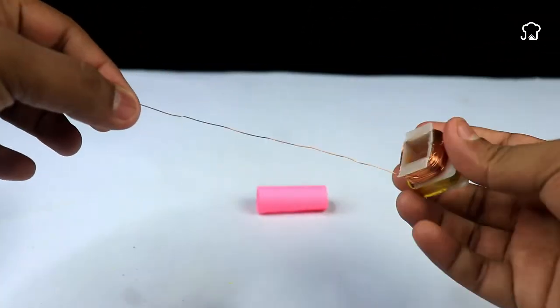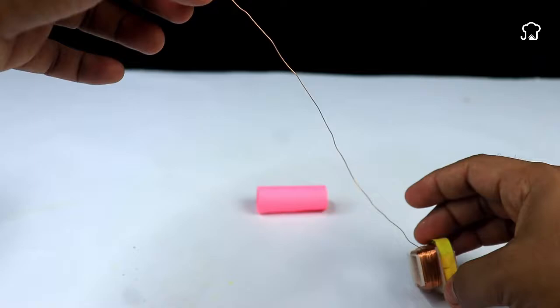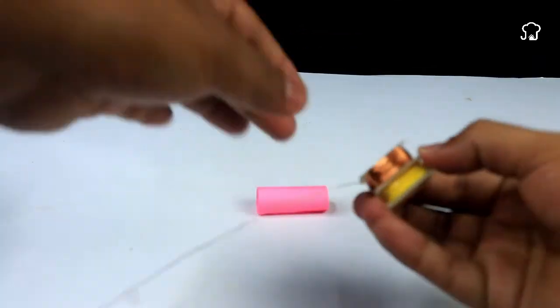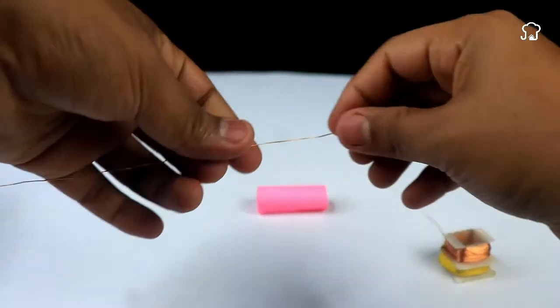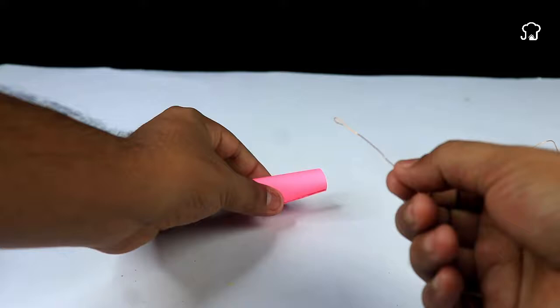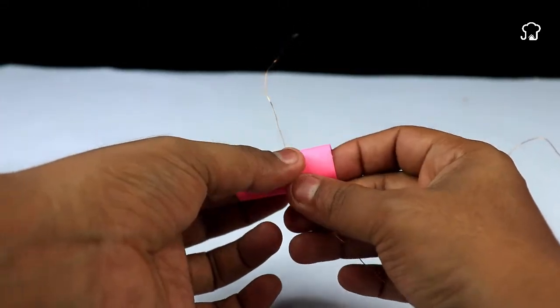We will need fine copper wire, which we will wind around the cardboard cylinder. This winding creates a coil that is essential for the operation of the horn.